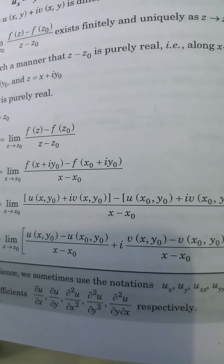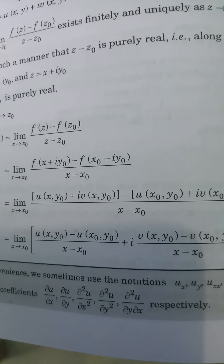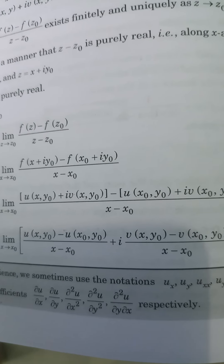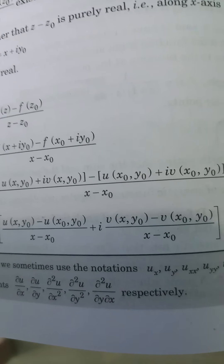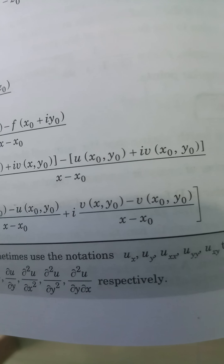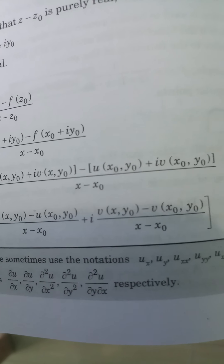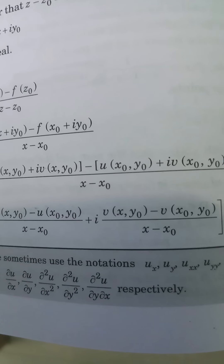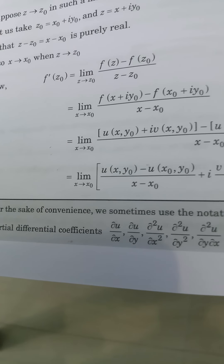Then f'(z0) equals the limit as x → x0 of [u(x, y0) − u(x0, y0)] / (x − x0) + i·[v(x, y0) − v(x0, y0)] / (x − x0), separating the two terms for convenience.